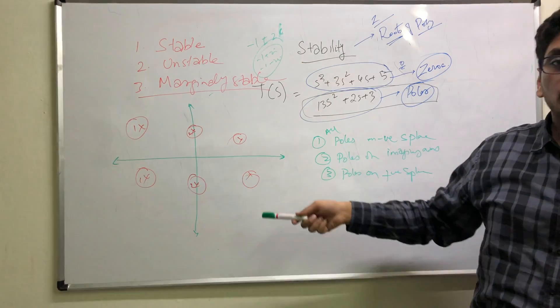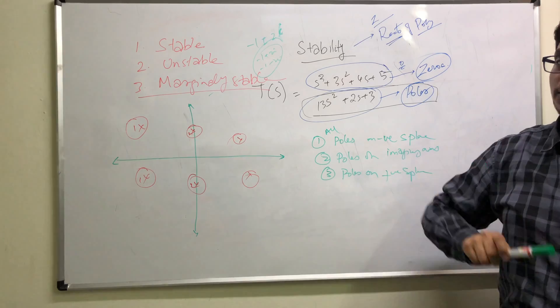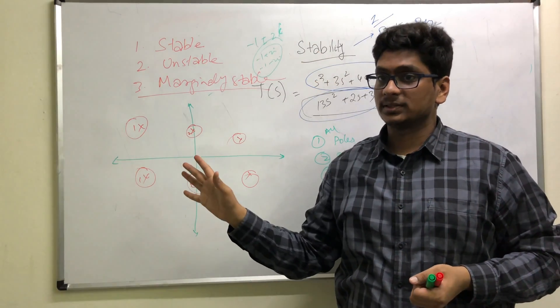However, if there are poles for a transfer function on the positive half of the s-plane, then the system is unstable. As simple as this.